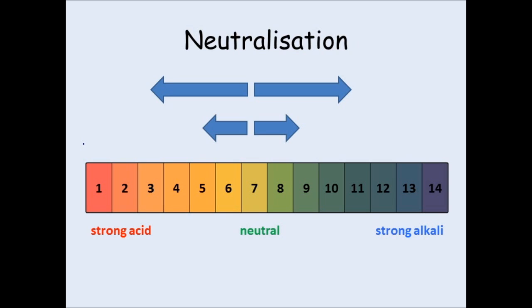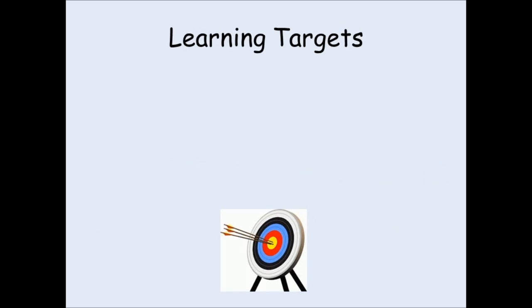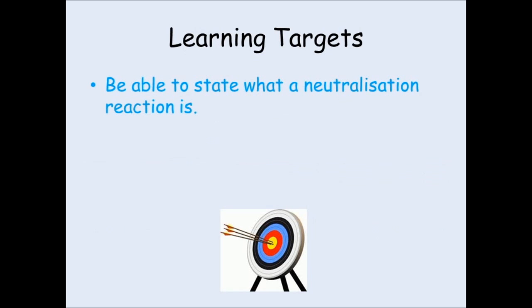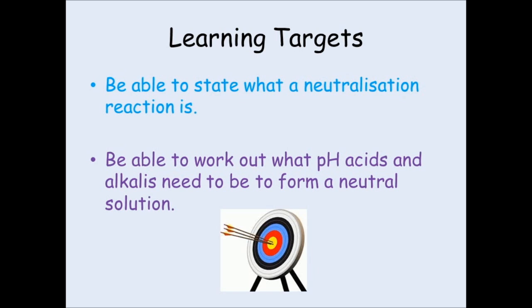So a neutralization reaction is when you add an acid to an alkali. But if you're adding the same amount of acid and alkali, they need to be of equivalent strength. So if you have a really strong acid, you need a really strong alkali to neutralize it. Whereas if you have a weak acid, you'll need a weak alkali. You should now be able to say what a neutralization reaction is and work out what pH acids and alkalis need to be to form a neutral solution when using the same amount of each.